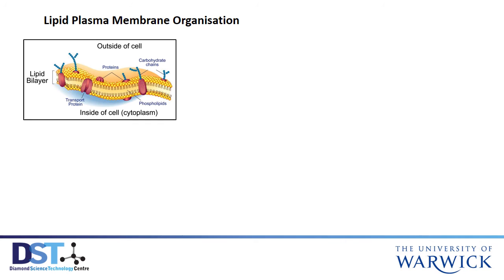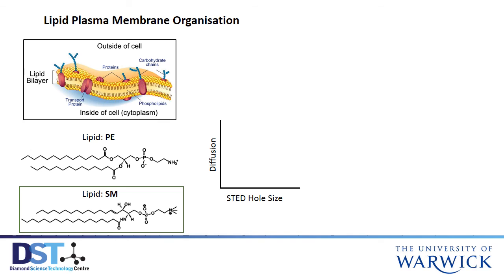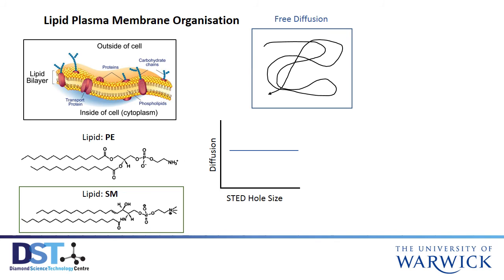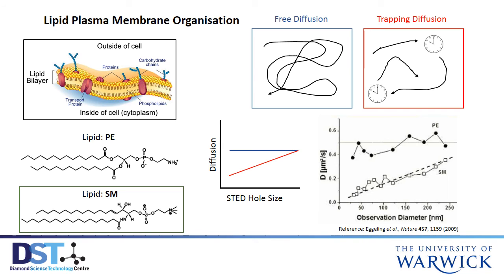Finally, let's look at direct application to the biological system using a STED microscope. The alignment and interaction of lipids or fat molecules on the plasma membrane of organisms is very important because most of the signalling events occur at the membrane. Two lipids, PE and SM, were looked at by labelling with fluorophores, and it was thought that the SM lipid is much more involved in processes than the PE lipid. If the diffusions of the lipids on the surface of the membrane are different, then they are undergoing different processes, and these diffusions can be measured with a STED microscope by varying the size of the doughnut hole. In free diffusion, the lipid is almost always moving; in trapping diffusion, the lipid moves and then is trapped for some time during an interaction, and then moves again. The PE was found to behave with free diffusion, but the SM with trapping diffusion, which confirmed the belief that the SM is involved in more processes.